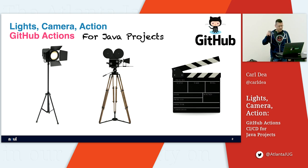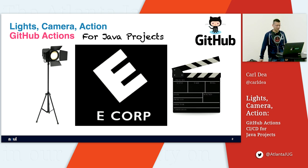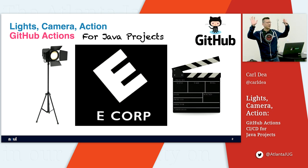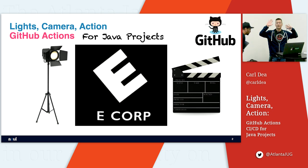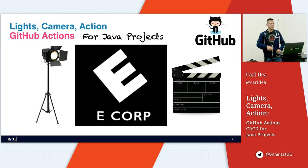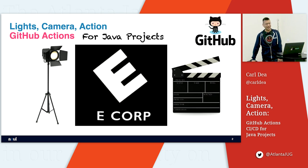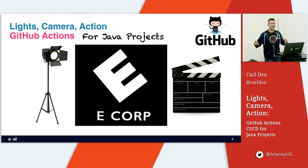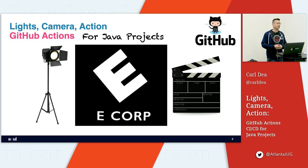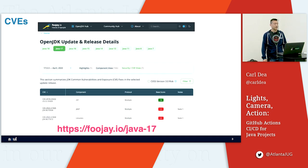Imagine you work for a fictional company. Has anybody used GitHub Actions before, or has never heard of it? This is a basic tutorial, so I'll get you up to speed. Imagine you work for a fictional company called E-Corp. And the security officer or someone on the software team says, hey, there's a vulnerability in the Java release, the JDK.